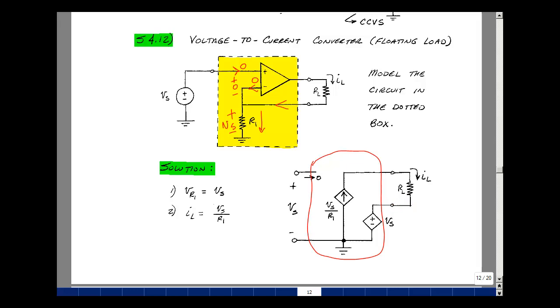This is called a voltage-to-current converter. It's using a floating load here, it's not tied back to ground. And this is supplemental problem 4.12.